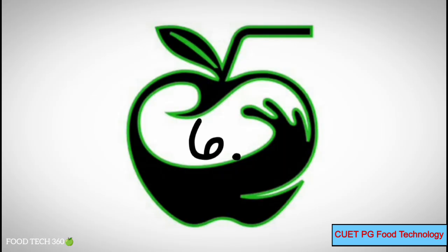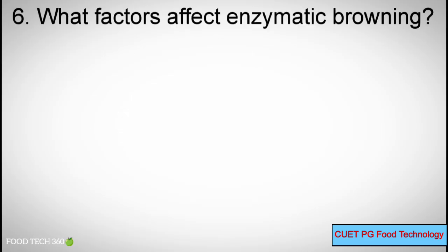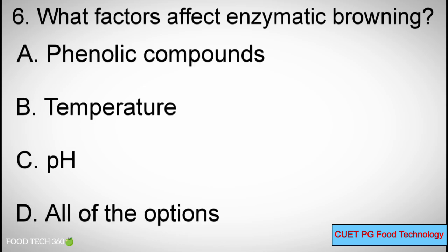Q6: Which factors affect enzymatic browning? A. Phenolic compounds, B. Temperature, C. pH, D. All of the options.